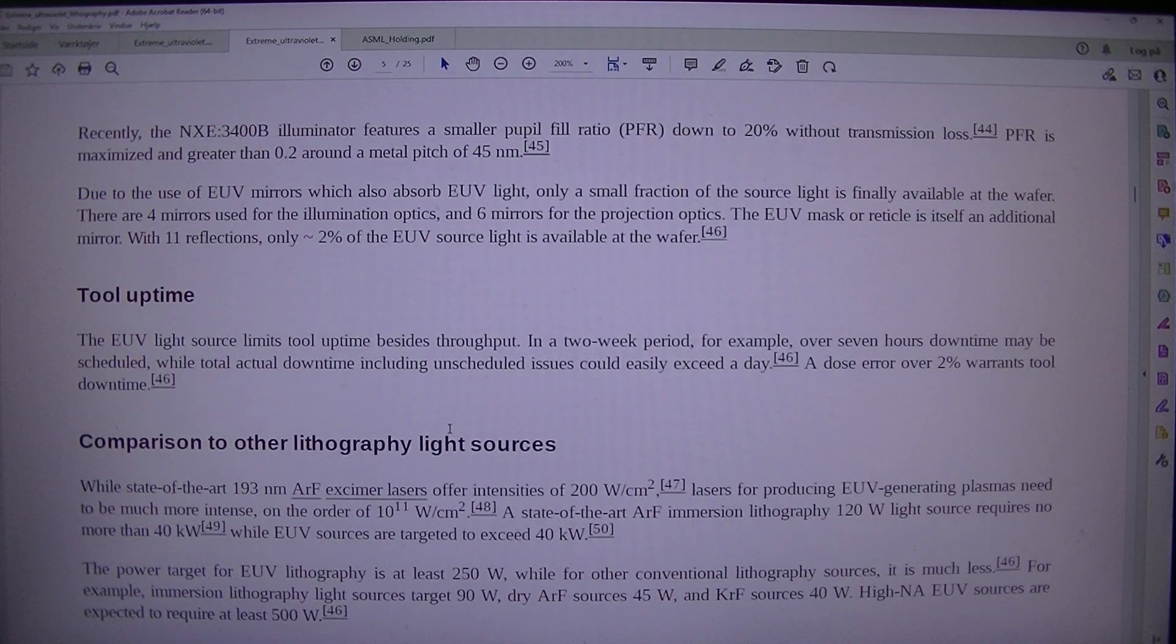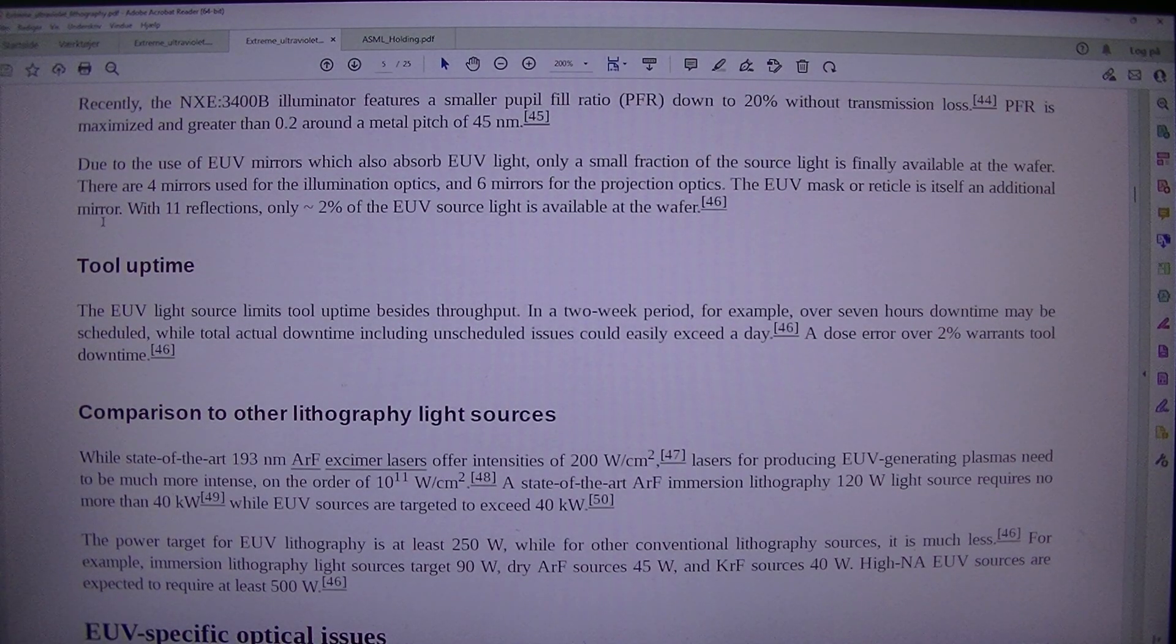Recently, the NXE 3400B illuminator features a smaller pupil fill ratio, PFR, down to 20% without transmission loss. PFR is maximized and greater than 0.2 around a metal pitch of 45 nm, due to the use of EUV mirrors which also absorb EUV.